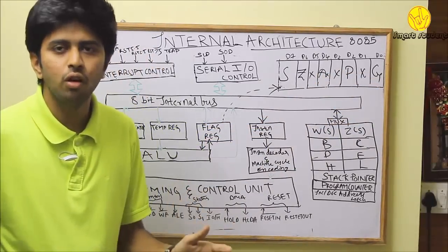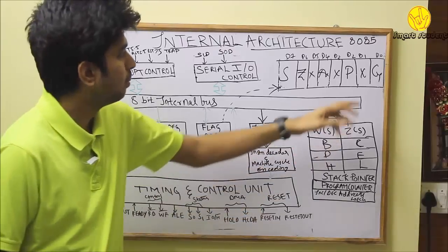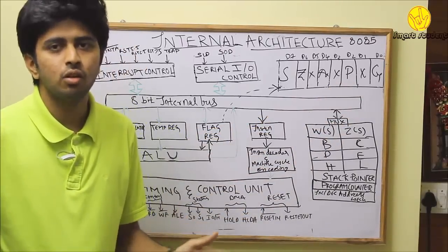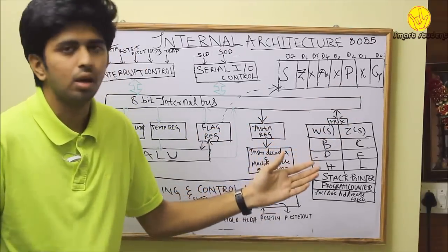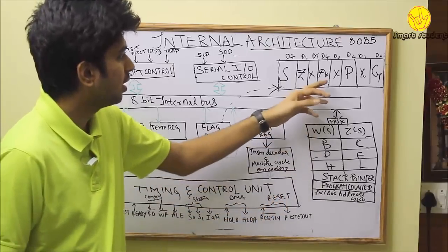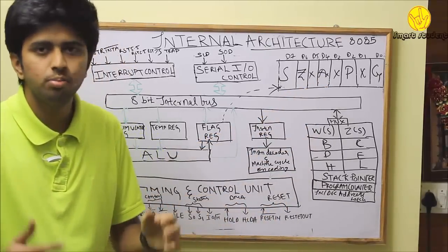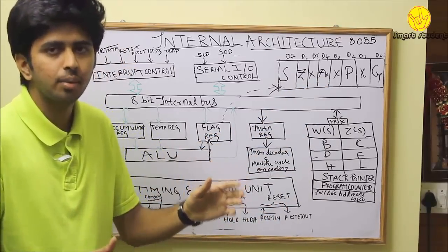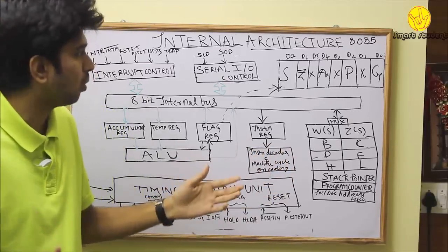Carry bit is set to 1 when there is an overflow of bits from D7. Parity bit: when there are even numbers of 1s, parity bit is set to 1, or else it is set to 0. Auxiliary carry bit: when there is an overflow of bits from D3 to D4, auxiliary carry bit is set to 1, or else it is set to 0.